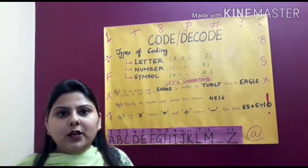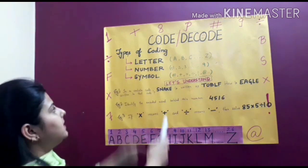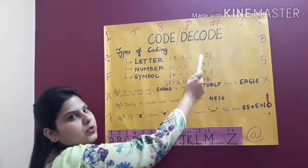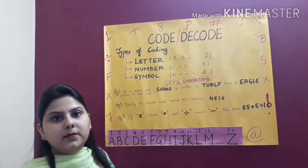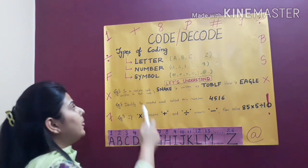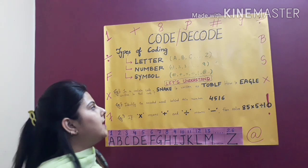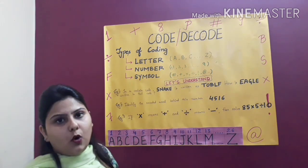So we know that there are three types of coding methods. First is letter coding which includes the letters of English alphabet that is A to Z. Then we have number coding which includes the numbers from 0 to 9. Then we have symbol coding which includes basic symbols such as hash, addition sign, multiply sign and so on.